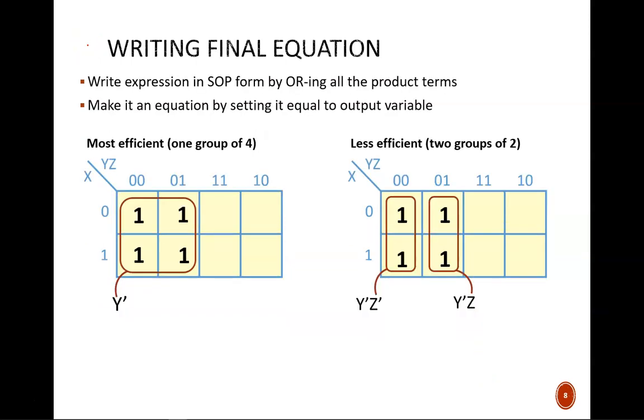Now we reach the simplest and final part of the Karnaugh map method, writing the equation. Since we have product terms already, we reach SOP form by ORing each of the product terms together and setting it equal to the output variable. In our most efficient example, the equation is simply Q equals Y'. Good news! That is the same equation we found from the visible pattern on the first slide. In the less efficient example, the equation is Q equals Y'Z' or Y'Z. Note how each group becomes a product term, and those product terms are ORed together.